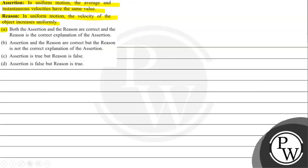Option A: both assertion and reason are correct and the reason is the correct explanation of the assertion. Option B: assertion and reason are correct but the reason is not the correct explanation of the assertion. Option C: assertion is true but reason is false. Option D: assertion is false but reason is true.